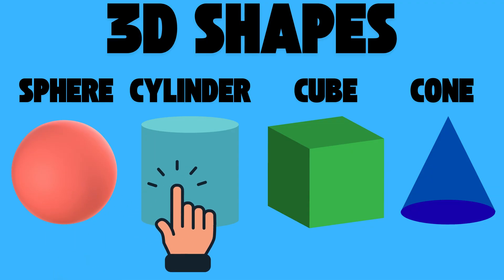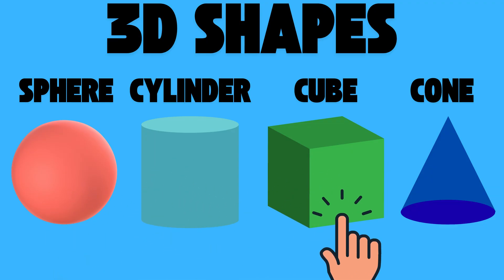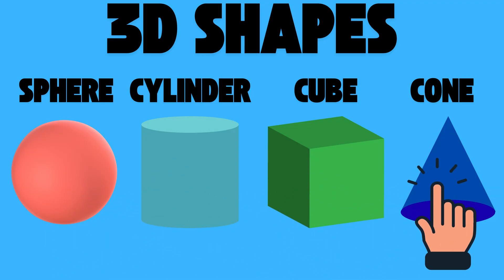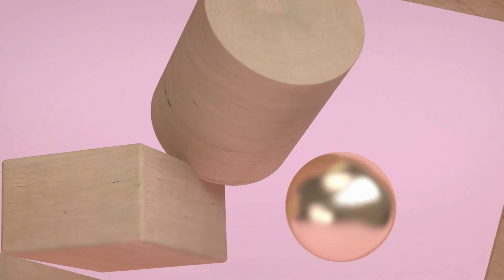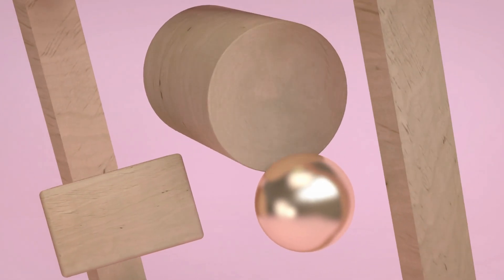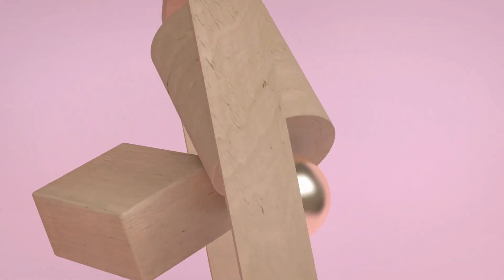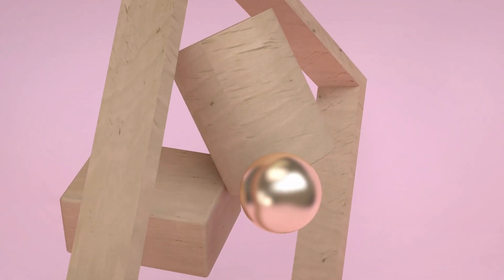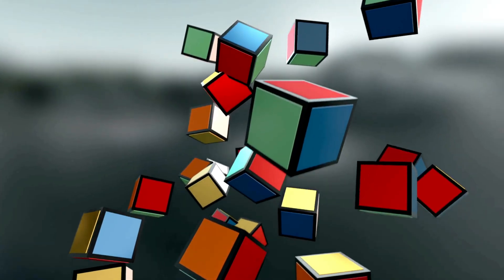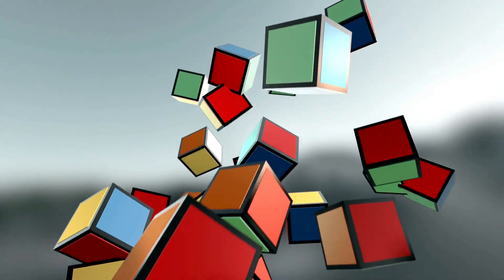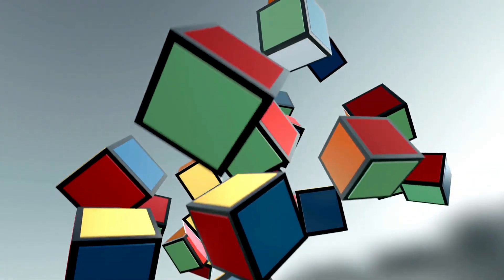Sphere, cylinder, cube or cone. Learning 3D shapes, we're in the zone. A 3D shape will have faces. Some may have points or bases.